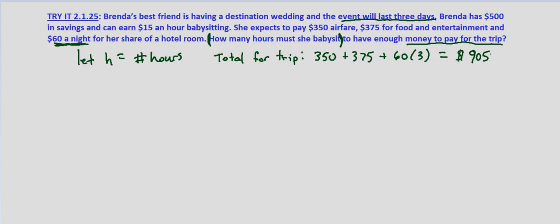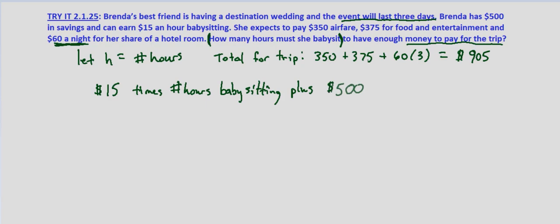Now we're told that she has $500 and she earns $15 an hour babysitting. So $15 times the number of hours babysitting plus the $500 she already has must be at least $905, because that is the estimated cost of the entire trip. Now let's translate that into an inequality.